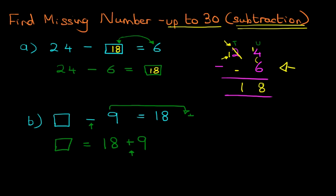On this side, it will be plus. If it's minus on one side, it's plus on the other side. So we can now do this. We've got 18 plus 9.